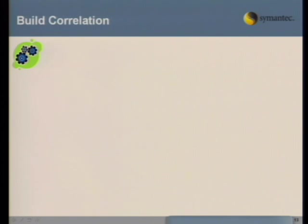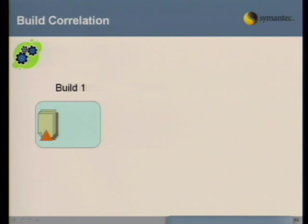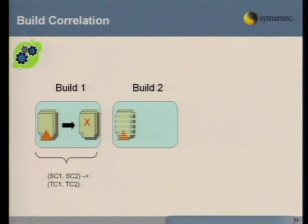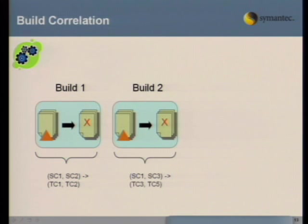The build correlation method starts on day one. Hopefully you'll have all this information saved in a database for mining when you're implementing this on build 200. You have source code changes that are checked in and test cases that fail — you make a set association: the set of source code changes checked in failed this set of test cases. You continue this with successive builds — more source code check-ins, more test case failures, and more set associations.